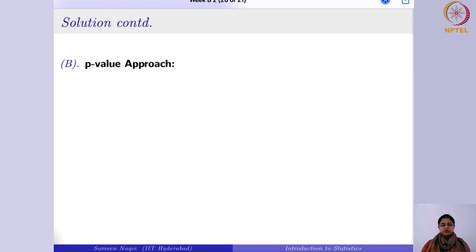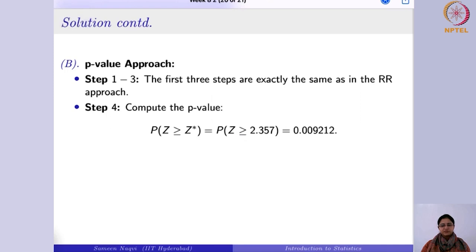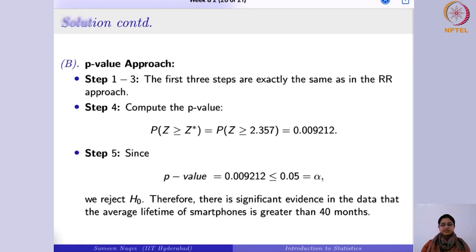Using the p-value approach: the p-value for a right-tailed test is P(Z ≥ z*) = P(Z ≥ 2.357) ≈ 0.009212. Since alpha is 0.05, and 0.009212 < 0.05, we reject the null hypothesis and conclude there is sufficient evidence from the data that the average lifetime of smartphones is greater than 40 months.